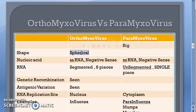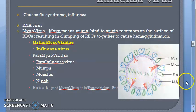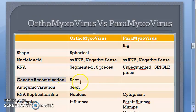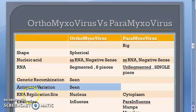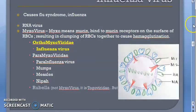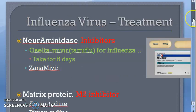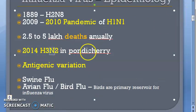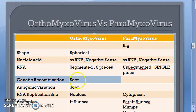Now the differences between orthomyxovirus and paramyxovirus. Orthomyxovirus is spherical, has single-stranded negative-sense RNA, and it is segmented — there are eight pieces of RNA. Because of this segmentation, genetic recombination and antigenic variation can be seen. This antigenic variation explains why every outbreak is a different strain: H1N1 in 2010, H3N2 in 2014.